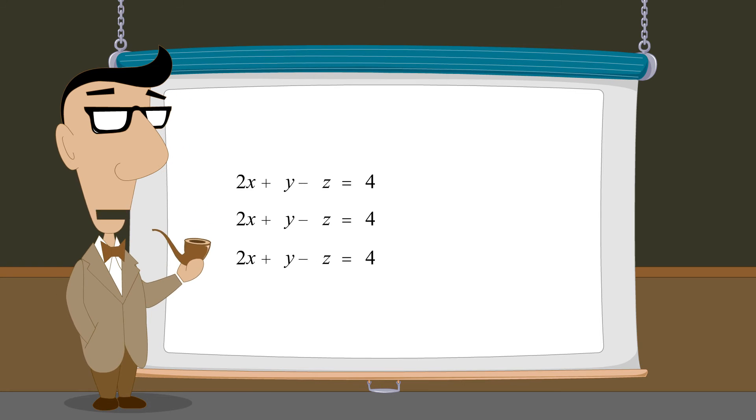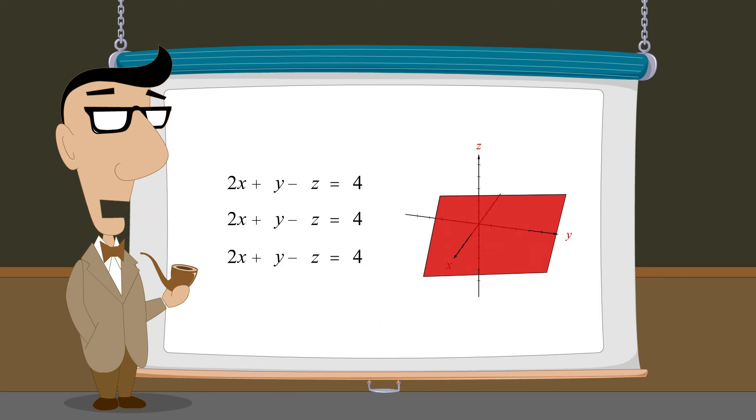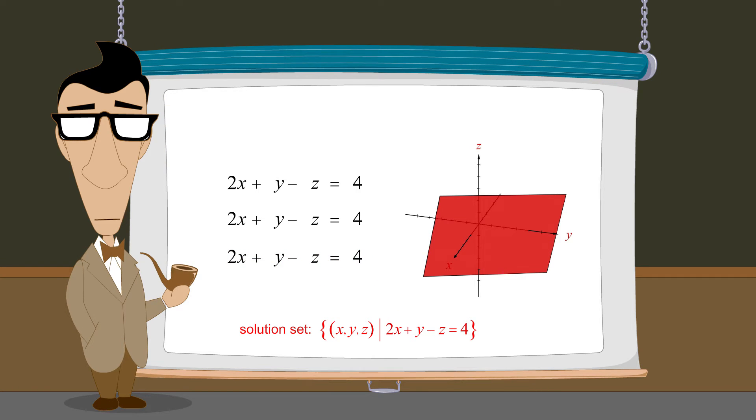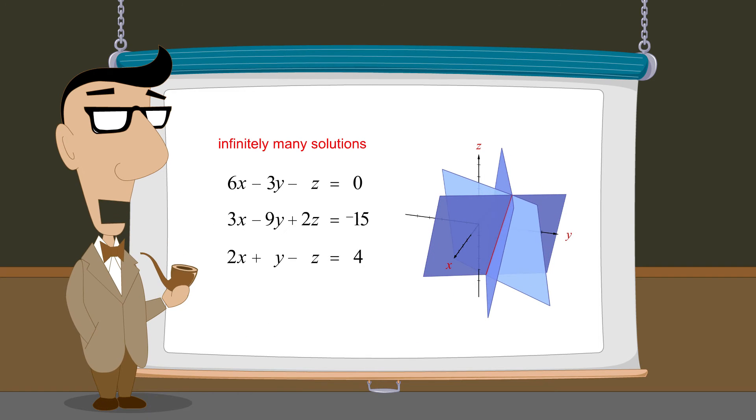In this case, the solution set of the system is described by any of the equations. However, when all the planes intersect along a line, then this solution set is not described by any of the equations.